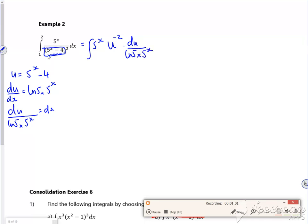What's quite nice about this is the 5 to the x's will cancel there. Now the log 5 is just a number, so I'm going to bring it to the front.